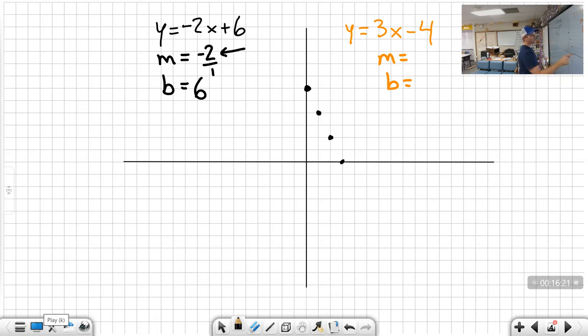That's my beginning value. If my beginning value is 6, I start there. Now I'm going to grow it down 2, right 1. Down 2, right 1. I just want dots. Down 2, right 1. You can see each time I go down 2, right 1. But all I want are the dots. You could even go in the opposite direction. And you'll notice when I draw a line, it goes through all those dots. That is what I expect you to do graphing a line.